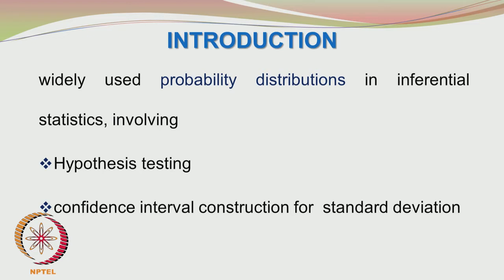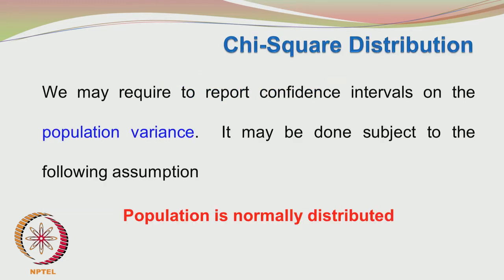The chi-square distribution finds application in hypothesis testing and confidence interval construction for the standard deviation. We may require to report confidence intervals on the population variance sigma square. The fundamental assumption we make is that the population is normally distributed. This is not a very serious assumption, as many populations do in fact tend towards the normal distribution, and small deviations from this normality are not serious.